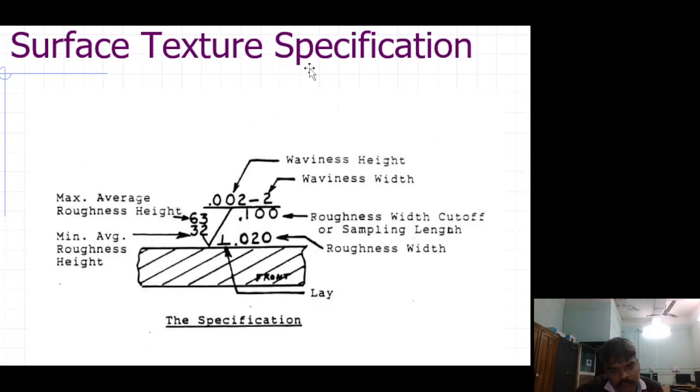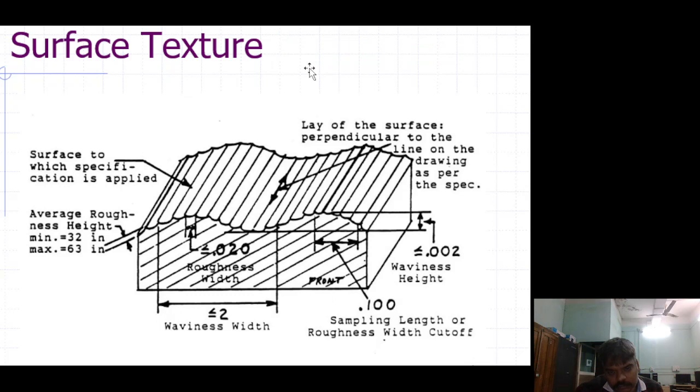Surface texture specification. Surface confidential specification, waviness height, waviness width, roughness width, lay, cutoff or sampling length, roughness width, amplitude, maximum average roughness height, minimum average roughness height.